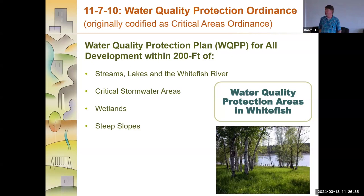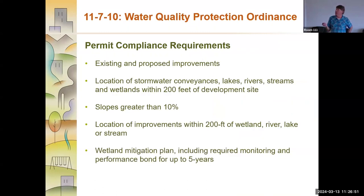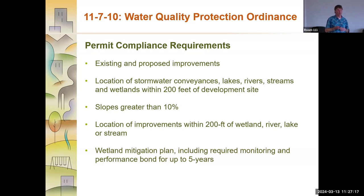A lot of compromise back and forth to arrive at what we felt was a reasonable ordinance that provides critical protections for our stormwater conveyances, our intermittent and ephemeral streams, steep slope construction, and all streams within our jurisdiction, including Whitefish Lake. We require a permit compliance submitted to the Planning and Building Department with the building permit. It has to identify all existing and proposed improvements, the location of all aquatic resources, slopes greater than 10%, and proposed improvements sited within 200 feet of our aquatic resources. We also included a compensatory mitigation requirement and bonding for improvements made to offset wetland loss.